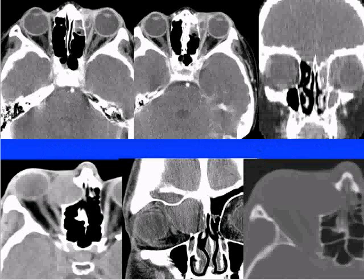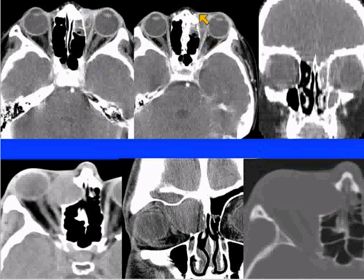Here are some other examples. This is a subperiosteal abscess. The key with a subperiosteal abscess: you want to see the adjacent ethmoid sinus disease. You can see the abscess within the medial canthal region with rim enhancement. You want to see some defect within the lamina papyracea, producing this cystic type of appearance.